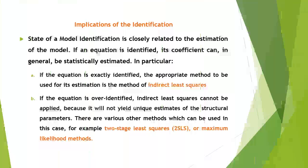Let us conclude by pointing out the implications of identification. Identification is closely related to estimation. If an equation is identified, its coefficients can in general be statistically estimated. If the equation is exactly identified, the appropriate method is indirect least squares. If the equation is over-identified, indirect least squares cannot be applied because it will not yield unique estimates of the structural parameters. Various other methods can be used in this case, for example two-stage least squares or maximum likelihood methods.